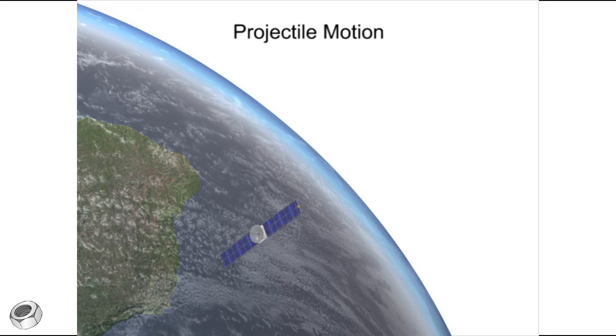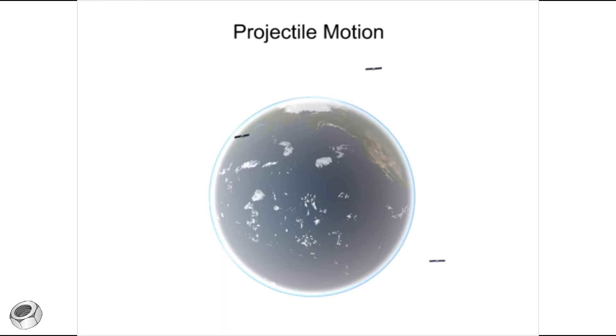A satellite is any object that orbits the Earth, falling continually due to the planet's gravitational pull, but traveling fast enough so its trajectory will follow the curvature of the Earth, thus never hitting the ground.